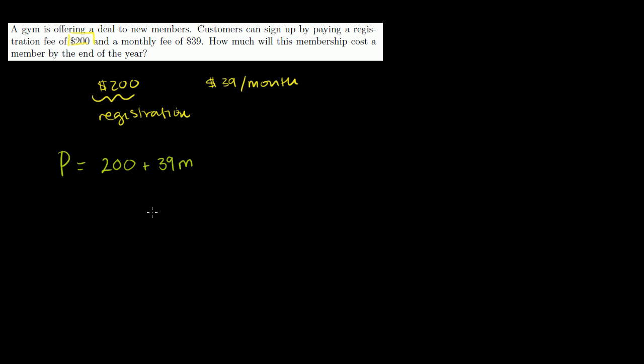So just to tie this all together with linear equations and graphs of them, let's graph this relation. And remember, the graph of a line can be y is equal to mx plus b. So to put this line in this form, or this equation in this form, we can just rearrange the 39m and the 200. And you get P is equal to 39m plus 200.